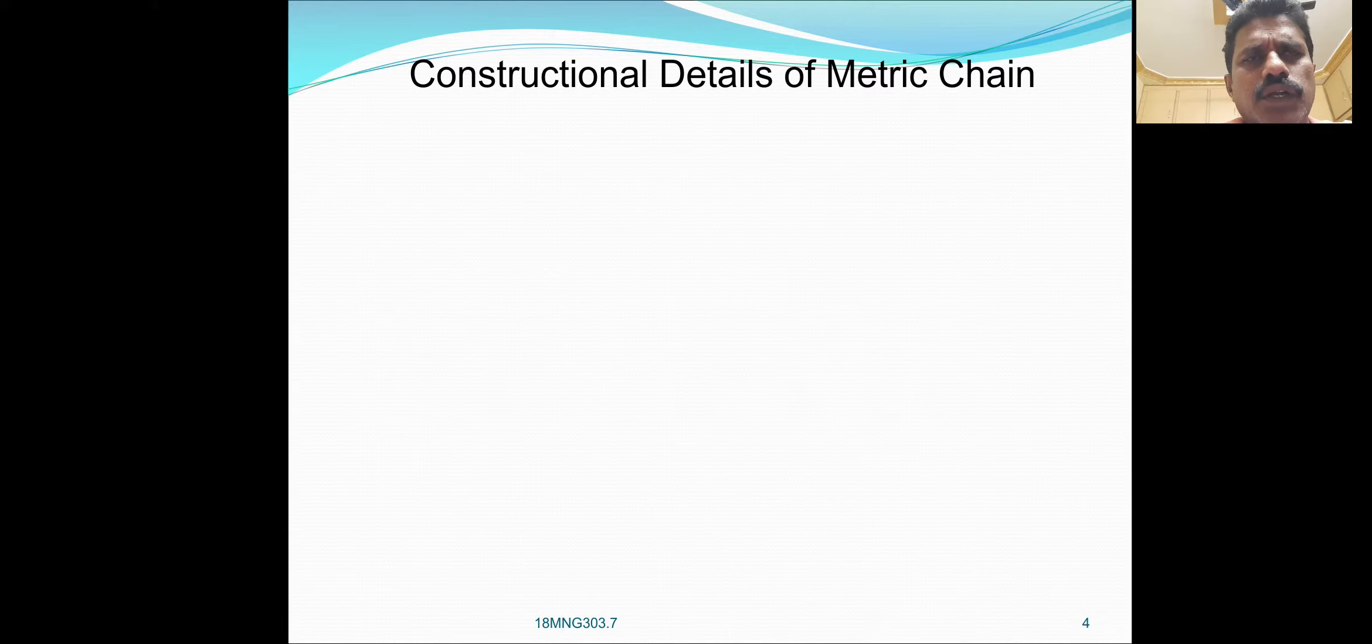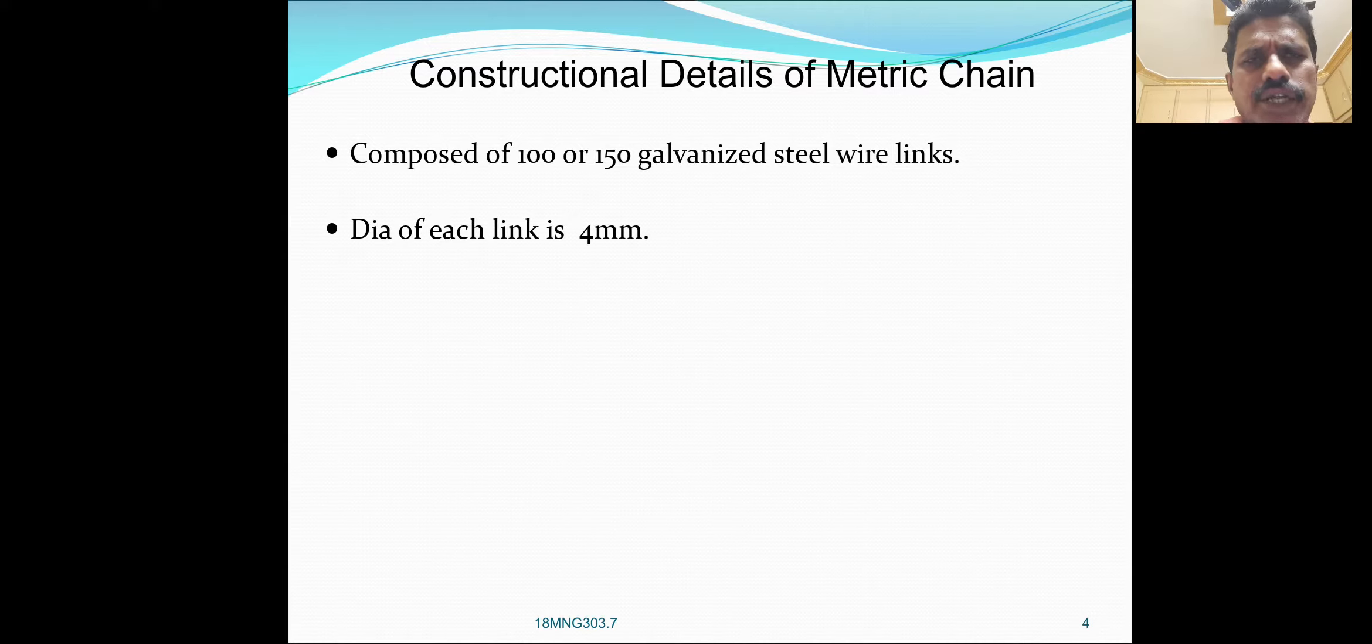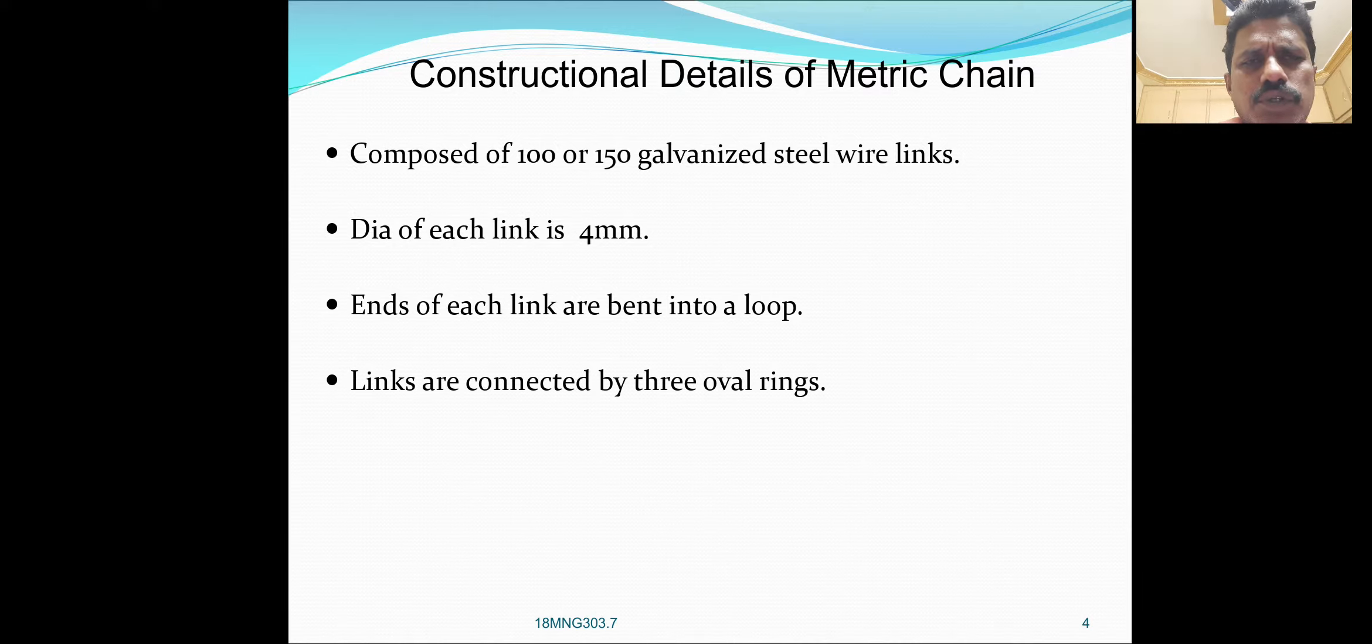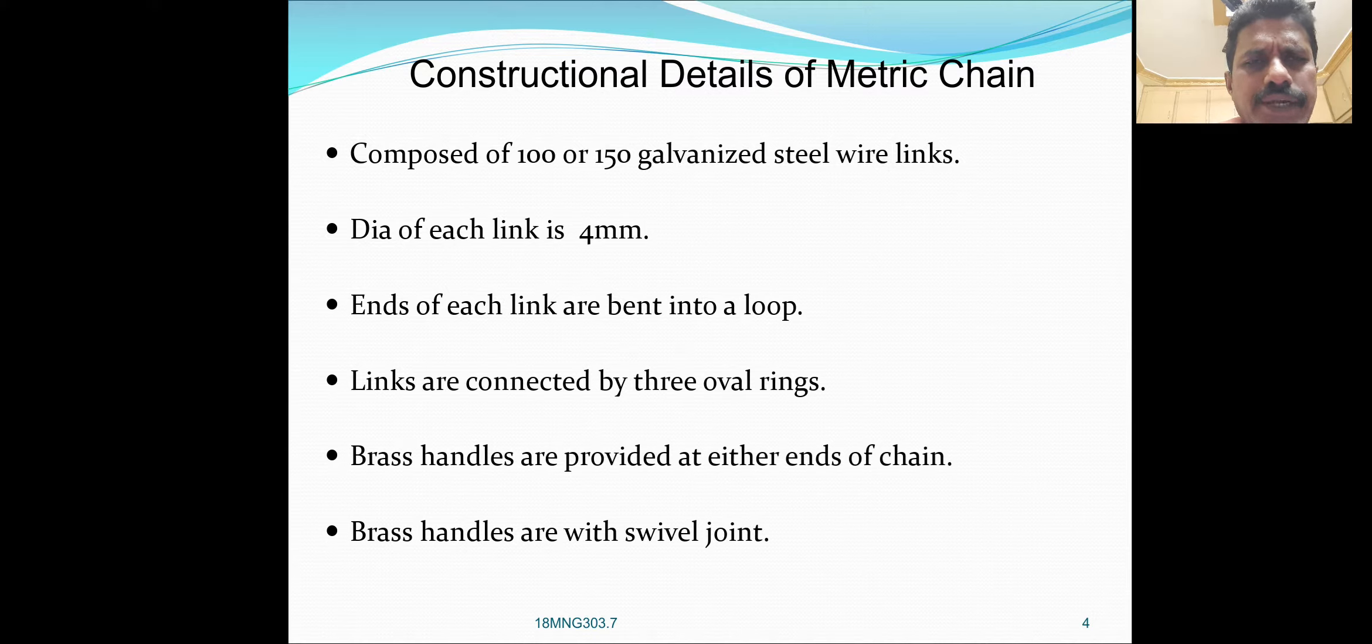Today, construction details of metric chain. It is composed of 100 or 150 galvanized steel wire links. Diameter of each link is 4 mm. Ends of each link are bent into a loop. Links are connected by three oval rings. Brass handles are provided at either ends of chain with swivel joint.